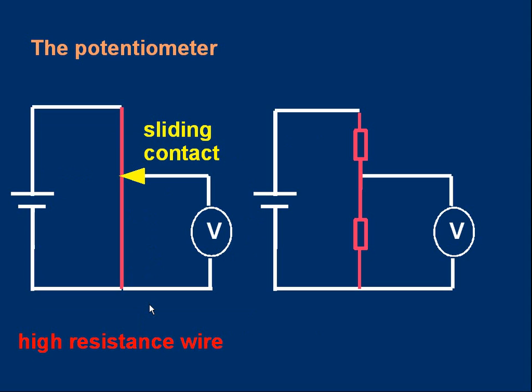The diagram on the left is equivalent to the circuit on the right. If you look carefully at the left-hand diagram, the sliding contact divides that high resistance wire into two parts, the part above and the part below.